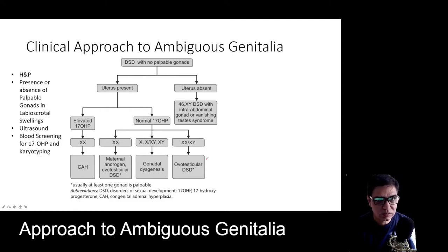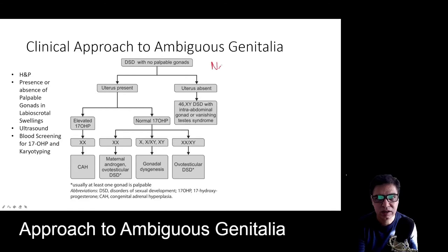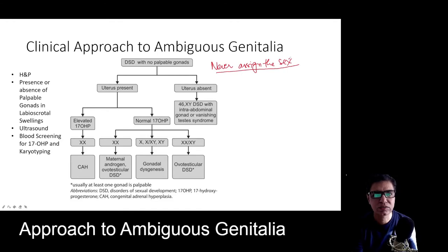Once history and examination are done, parents will typically ask whether their child is male or female. The most important rule is: never assign the sex. Tell the parents it requires further investigations and is a complex question — it may depend on how the child is raised, the underlying abnormalities, and the socio-cultural beliefs of the family.